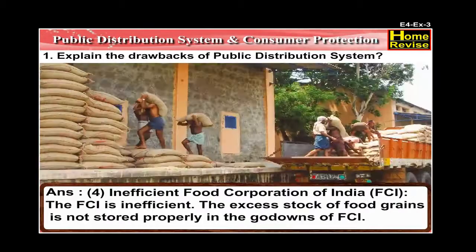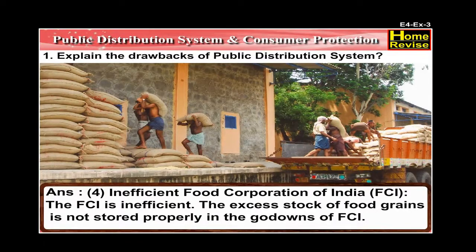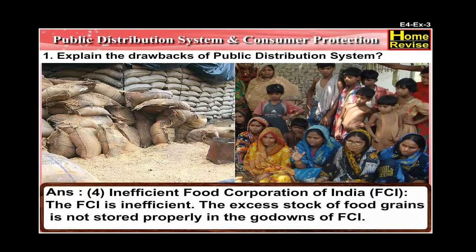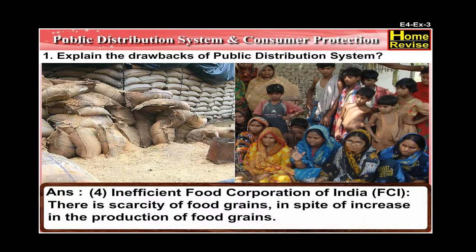Number 4: Inefficient Food Corporation of India — the FCI is inefficient. The excess stock of food grains is not stored properly in the godowns of FCI. There is scarcity of food grains in spite of an increase in the production of food grains.